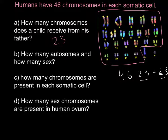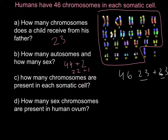If it is a somatic cell, it has 44 autosomes plus two sex chromosomes. If it is a gamete — male or female — it has 22 autosomes plus one sex chromosome. The next question is: how many chromosomes are present in each somatic cell? That is simply autosomes plus two sex chromosomes, so together it is 46, or 44 plus 2.